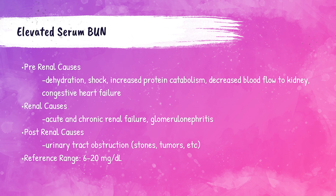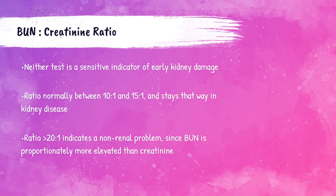Pre-renal causes of elevated BUN include dehydration, shock, decreased blood flow to the kidneys, or congestive heart failure. Renal causes include kidney failure or glomerulonephritis. An obstruction of the urinary tract due to a stone or tumor can be a post-renal cause. Neither BUN nor creatinine is a good sensitive test of early kidney damage. A BUN-to-creatinine ratio of 10:1 to 15:1 is a good indicator of kidney disease. If just the BUN is greatly increased with a ratio greater than 20:1, that suggests a non-renal problem.